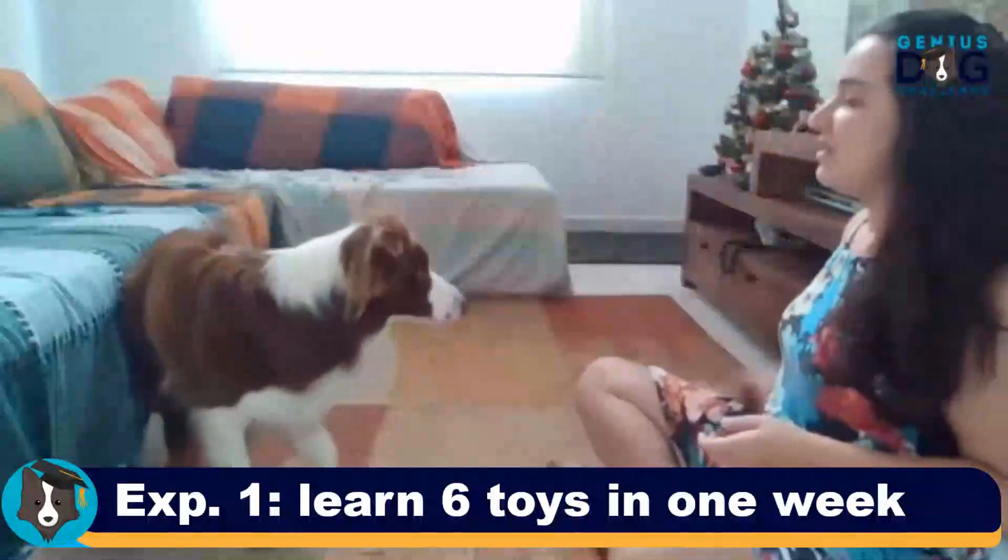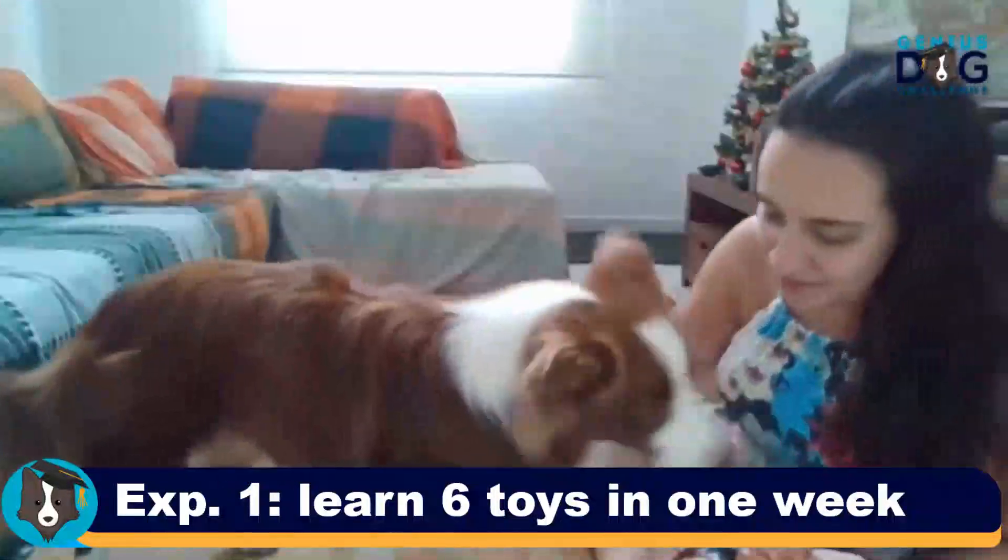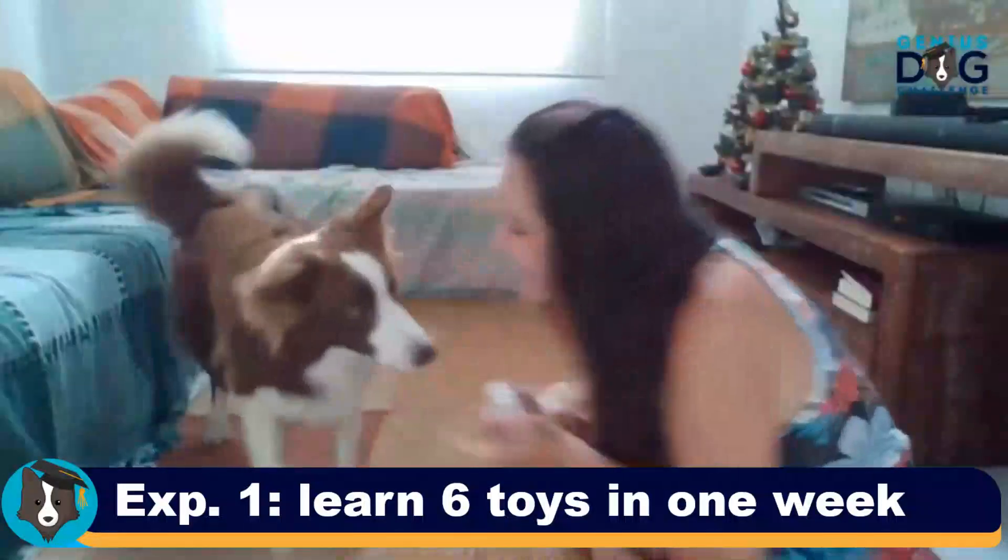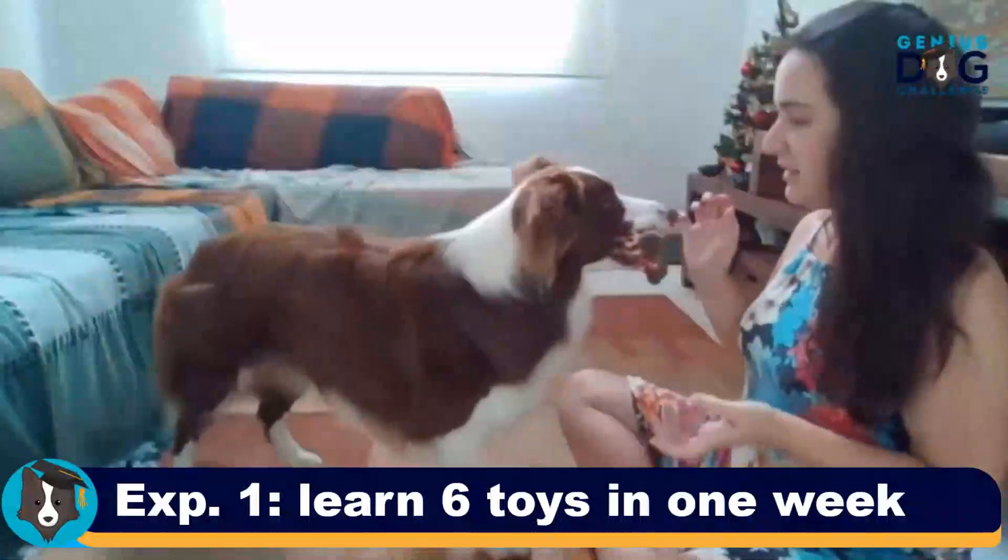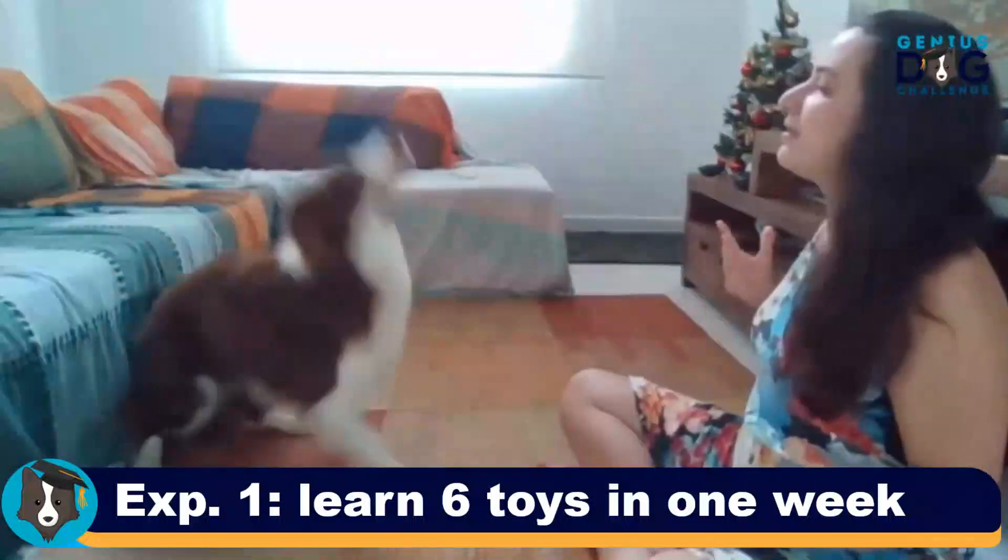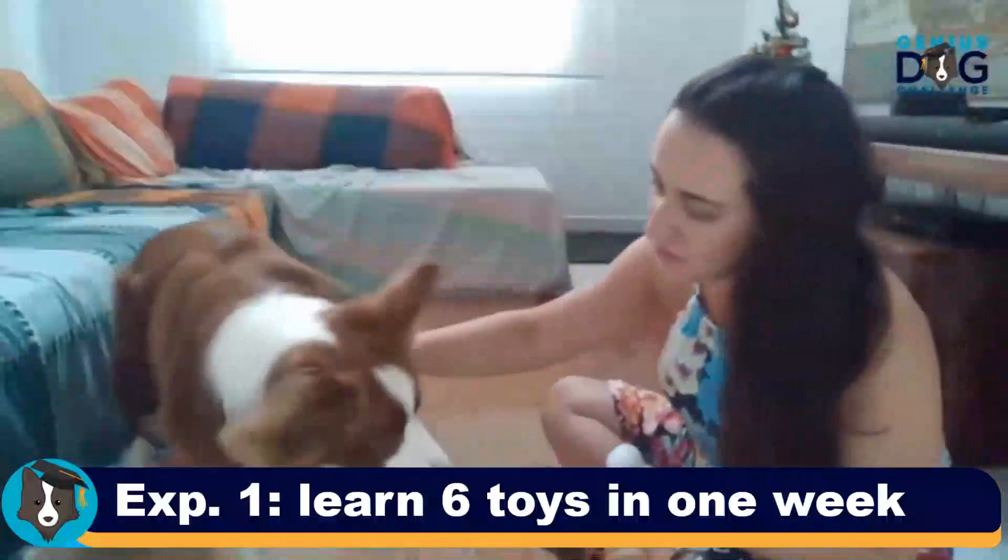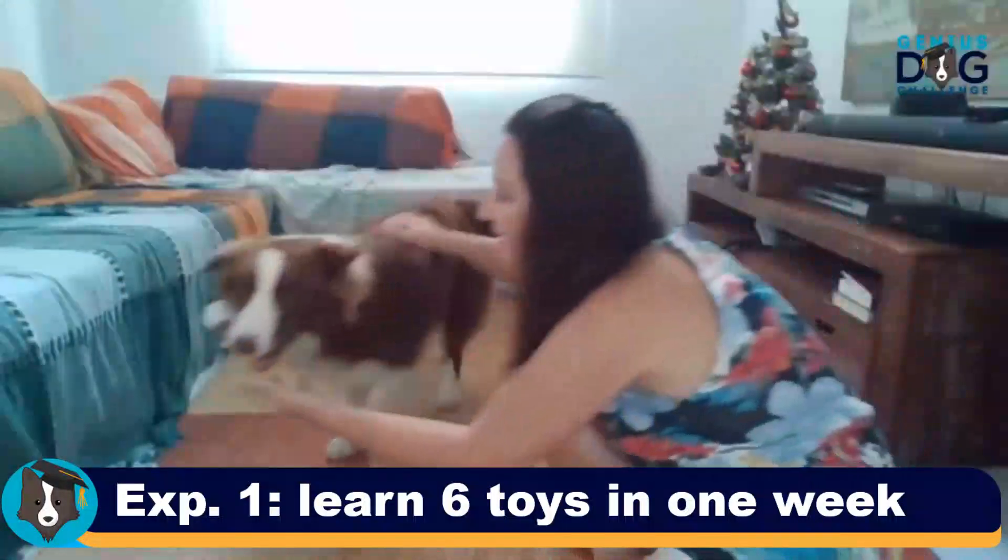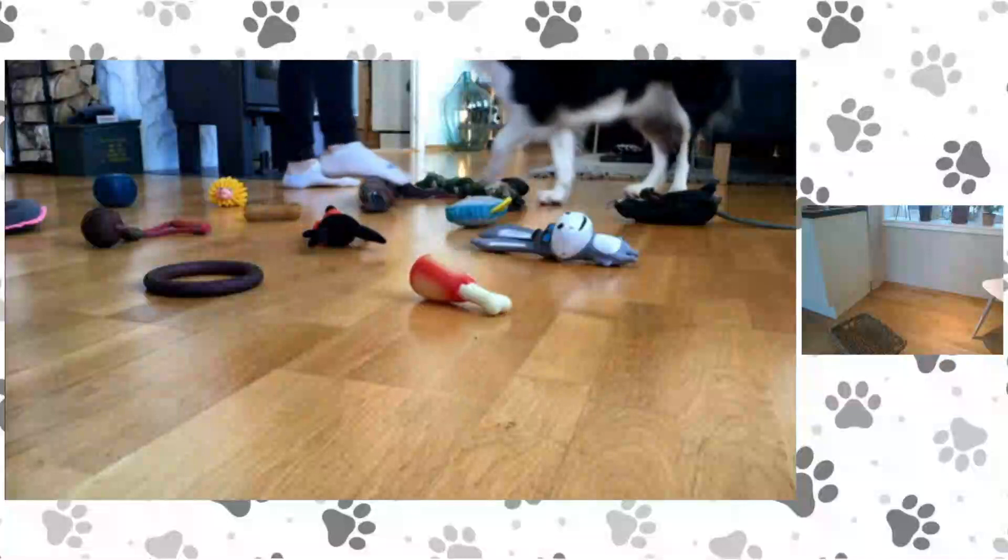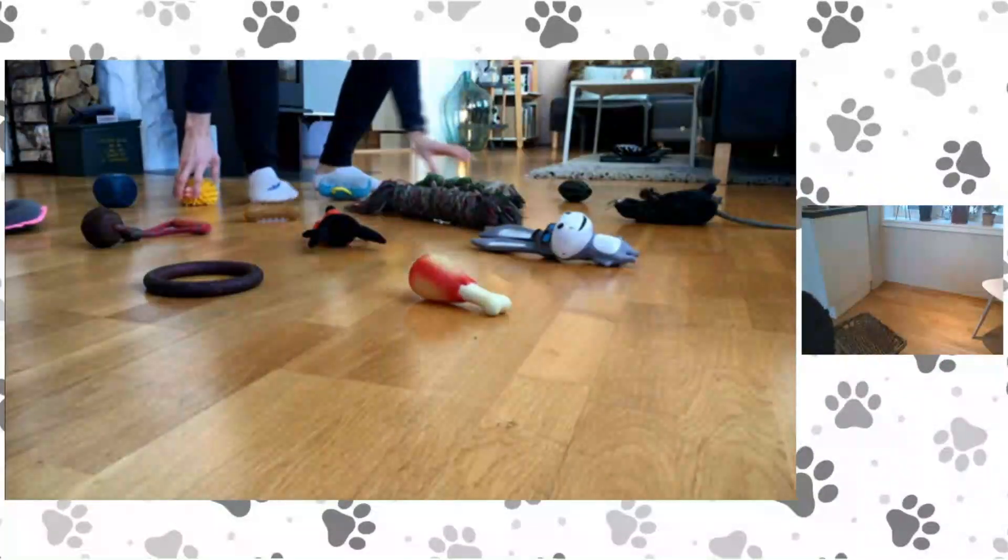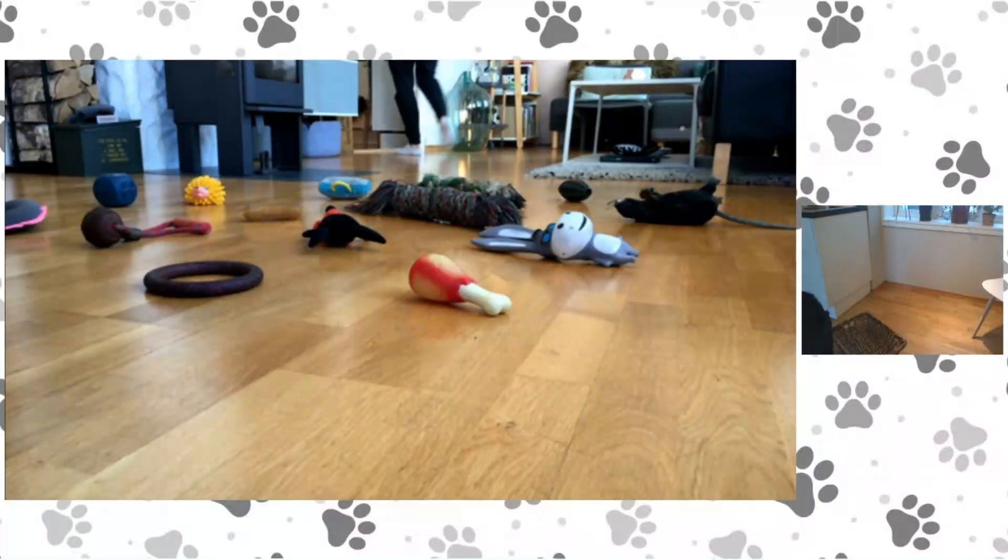In the first experiment, the owners had one week to teach their dog the names of six new toys. They did this by playing with their dog with one toy at a time while repeatedly saying the toy's name. Most of the owners played this game with their dog for about 30 minutes a day. At the end of the training week, we tested the dogs. We placed the six new toys on the floor, and just to make things a bit more difficult, we also added 10 of the dogs' old toys.